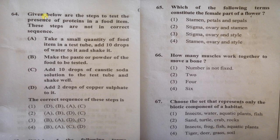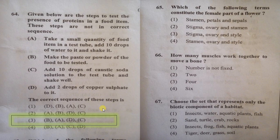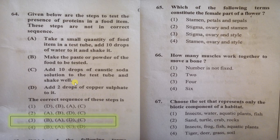The first question gives steps to test the presence of protein in a food item, and asks for the correct sequence. For this test, you prepare a food sample, add two drops of copper sulfate followed by 10 drops of caustic soda. If the food item contains protein, the solution will turn violet. The first two steps involve making the sample.